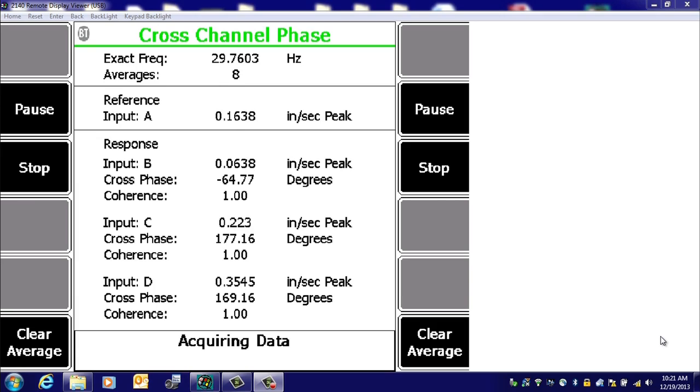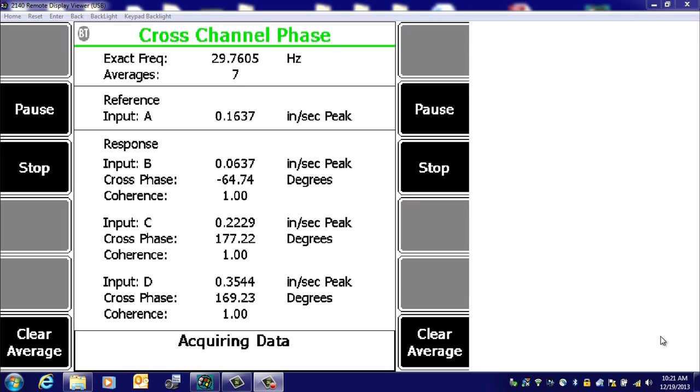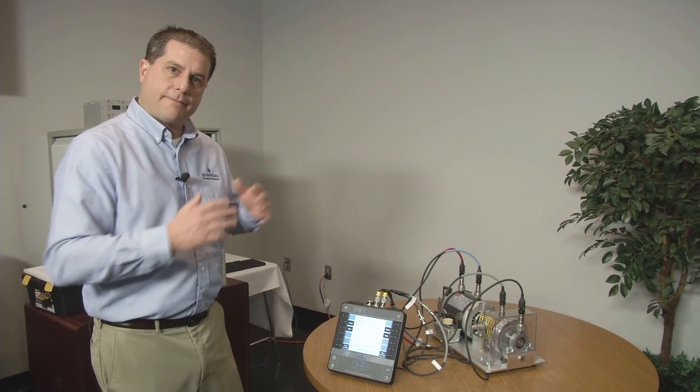But notice the cross-channel phase between A and C. That would be across the coupling is negative 177. So pretty close to almost 180 degrees phase shift going across that coupling, very indicative of misalignment condition, verifies what we suspected from using our fault frequencies and cursor to mark the two times line frequency peak in the spectrum.